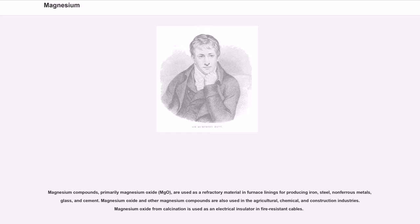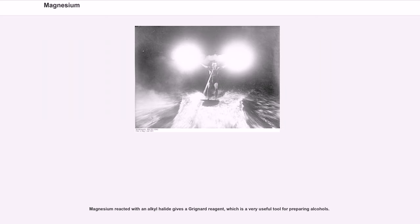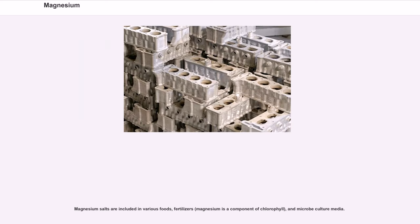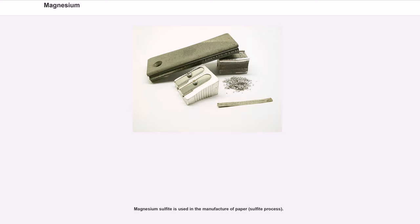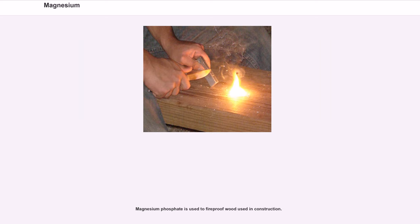Magnesium compounds, primarily magnesium oxide (MgO), are used as a refractory material in furnace linings for producing iron, steel, non-ferrous metals, glass, and cement. Magnesium oxide and other magnesium compounds are also used in the agricultural, chemical, and construction industries. Magnesium oxide from calcination is used as an electrical insulator in fire-resistant cables. Magnesium reacted with an alkyl halide gives a Grignard reagent, which is a very useful tool for preparing alcohols. Magnesium salts are included in various foods, fertilizers — magnesium is a component of chlorophyll — and microbe culture media. Magnesium sulfite is used in the manufacture of paper via the sulfite process. Magnesium phosphate is used to fireproof wood used in construction. Magnesium hexafluorosilicate is used for moth-proofing textiles.